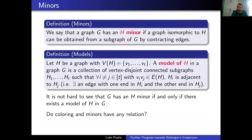An interesting question is: do coloring and minors have any relation? These are two fundamental topics in graph theory, but it's not really clear they should be related. Coloring is partitioning into independent sets, while finding complete minors or models is finding connected subgraphs with lots of edges between them. Why should having lots of connections be related to dividing into edge-less subsets? Intuitively we want to believe they're connected somehow, but it's not clear — and yet, that's exactly what Hadwiger's conjecture posits.